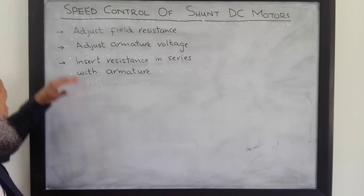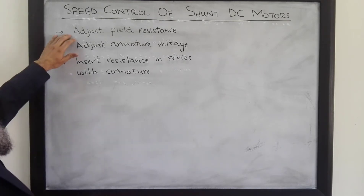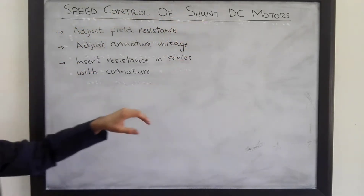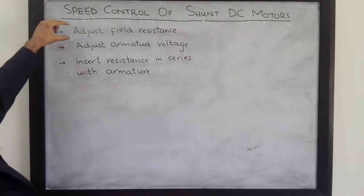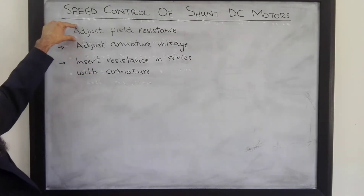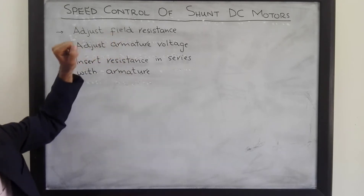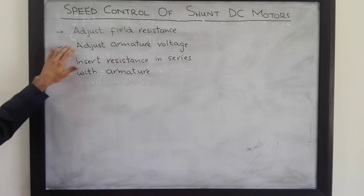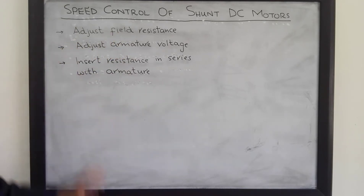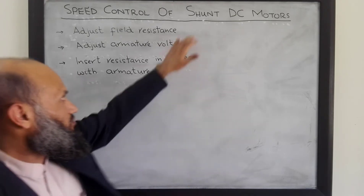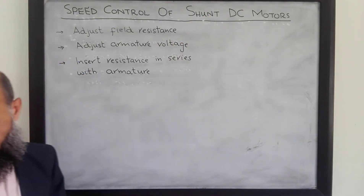There are three different techniques that can be utilized to control the speed of a shunt DC motor. In the last lecture, we talked about the first approach: adjusting the field resistance. In today's lecture, we shall talk about the remaining two approaches.